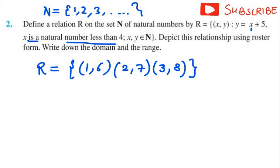Now we need to define the domain as well as range. Domain, as I told you earlier, is the set of all first elements of the ordered pair. So, domain will be 1, 2, and 3.